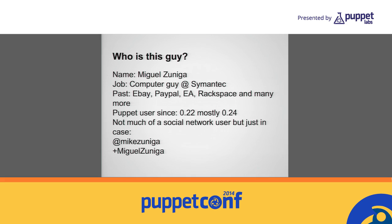So first of all, who is this guy? My name is Miguel Cuniga, I'm a cloud software principal engineer at Simon Tech — whatever you want to call it. In the past I've worked for eBay, PayPal, EA, Rackspace, and some others. I've been using Puppet since version 0.22, that was probably around 2007, 2008. It has matured a lot. For social networking, I'm not really a social networking guy, but you can find me there if you want to follow me.